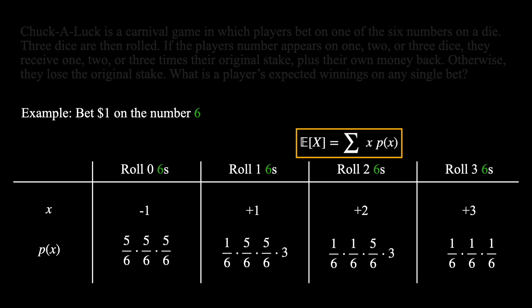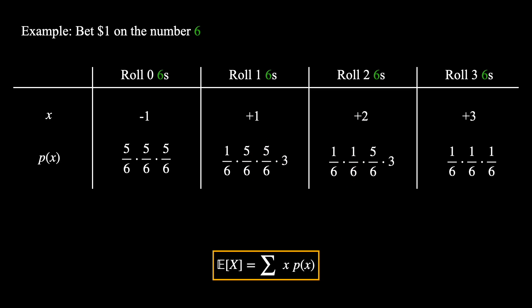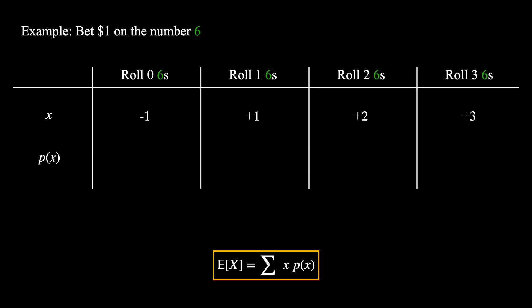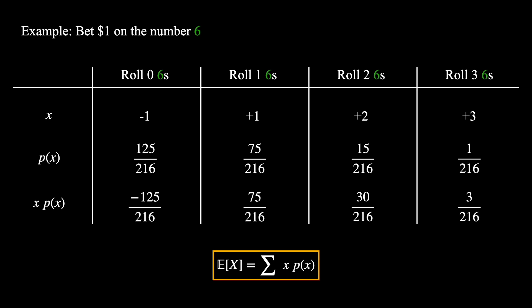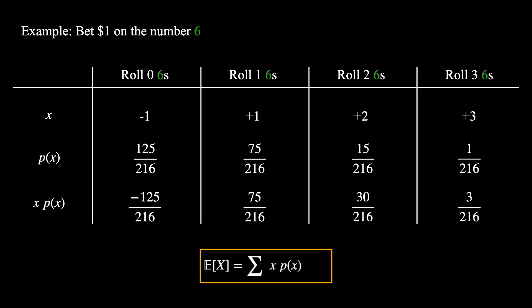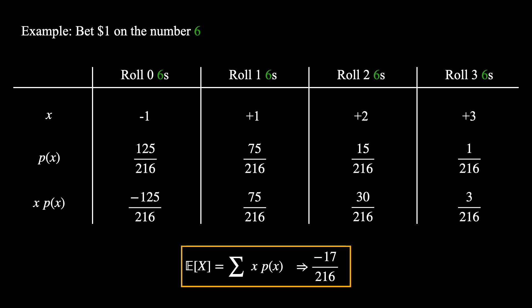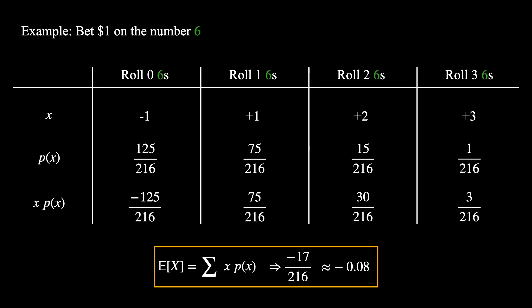Let's now put all of this information together to find our expected value. We start by simplifying the probabilities. Next, we compute the individual payoffs multiplied by each of the probabilities. Finally, we sum all of these numbers together to get that the expected value of any given turn on this game is negative 17 divided by 216. Putting that in decimal form, that's approximately minus 0.08, or a loss of 8 cents on a $1 bet.